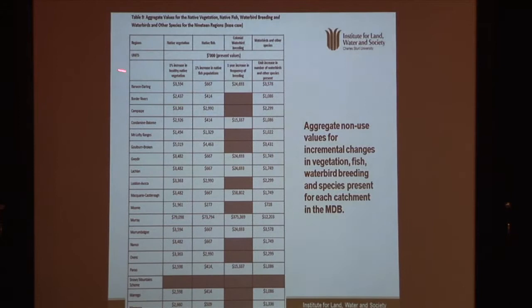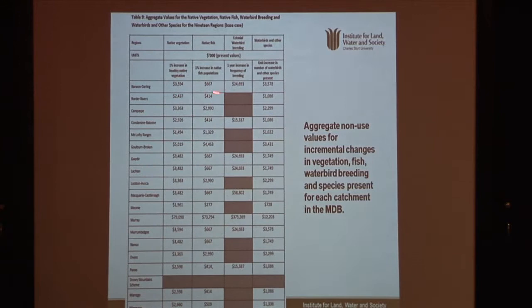To read the results table: for the Barwon-Darling, the value is $3.6 million for a 1% increase in healthy vegetation. If there was a 10% increase in healthy vegetation from the Basin Plan, we would multiply that value by 10. We'd add to that the change in fish population times the value, and so on — add it all together to get a value for the change in the Barwon-Darling, including recreation value and any others, to be included in the cost-benefit analysis.